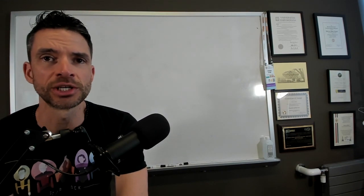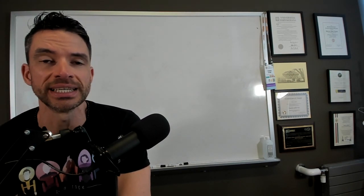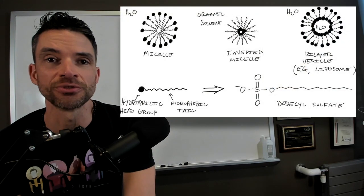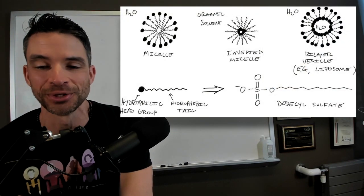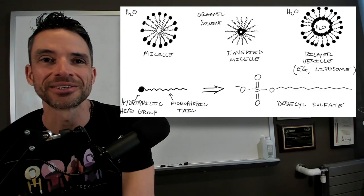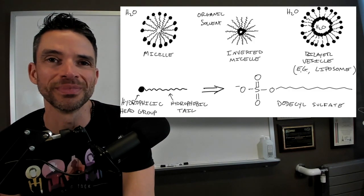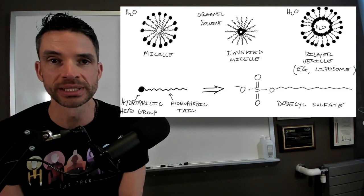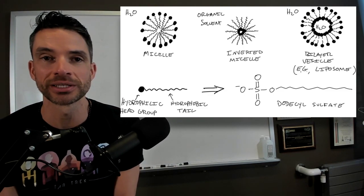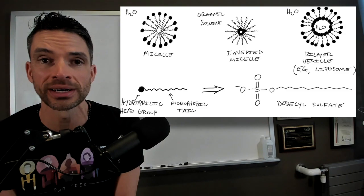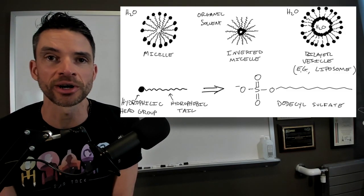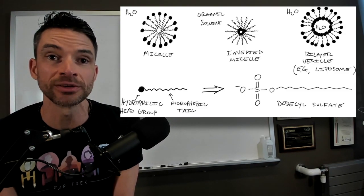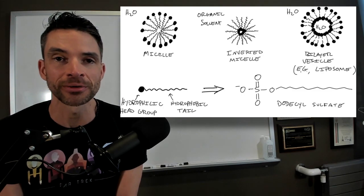Some important human-made structures include micelles, and you've all made micelles today if you washed your hands or brushed your teeth. The critical feature of a micelle is that the charged head groups of these little amphiphilic molecules are pointing out toward the water, and these greasy hydrocarbon chains are pointing outward, and that's what happens in an aqueous environment.